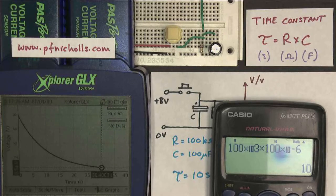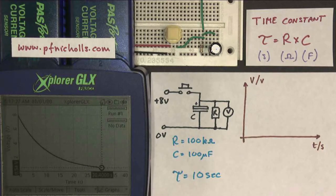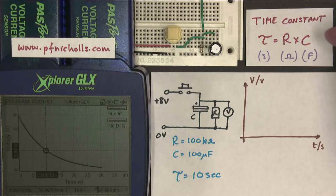Now, what we can see is that if I move the tracking tool along to the 10 second point, at 10 seconds we were down to about just under 3 volts. So the time constant, this value here, tells us the time it takes for the circuit to decay to around about one third of its starting voltage.